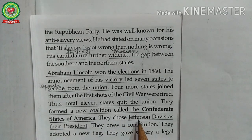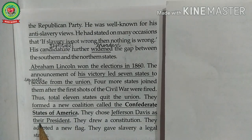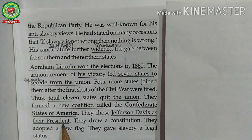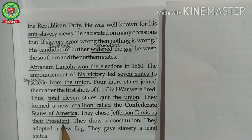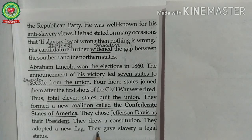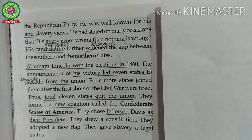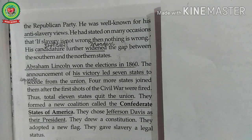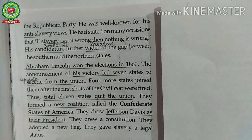They chose Jefferson Davis as their president. Under the leadership of Jefferson Davis, the southern states which had seceded from the American Union declared themselves sovereign — meaning free for internal and external affairs. They drew a constitution, adopted a new flag, gave slavery a legal status, abolished the protective tariff policy, and made slavery an officially legal institution.